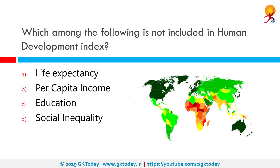Which among the following is not included in the Human Development Index? The correct answer is Social Inequality. The Human Development Index is a statistic composite index of life expectancy, education, and per capita income indicators, used to rank countries into four tiers of human development. A country scores a higher HDI when lifespan is higher, education level is higher, and GNI (Gross National Income) per capita is higher.